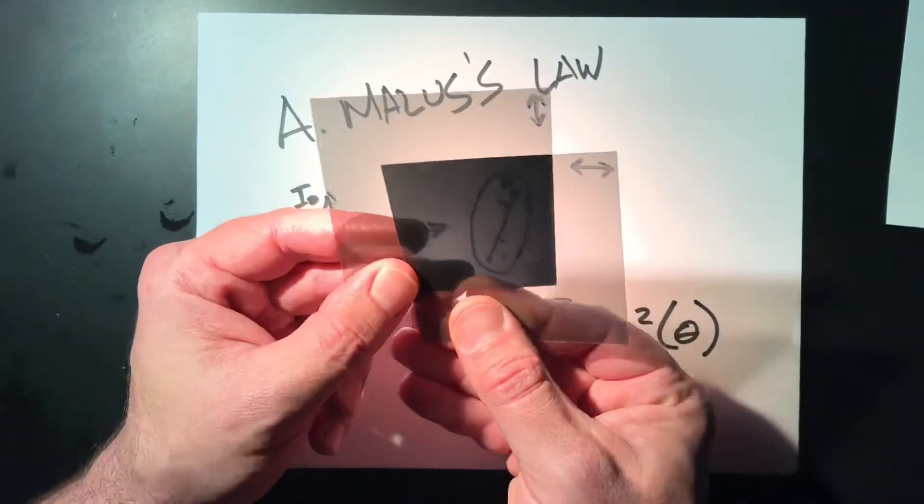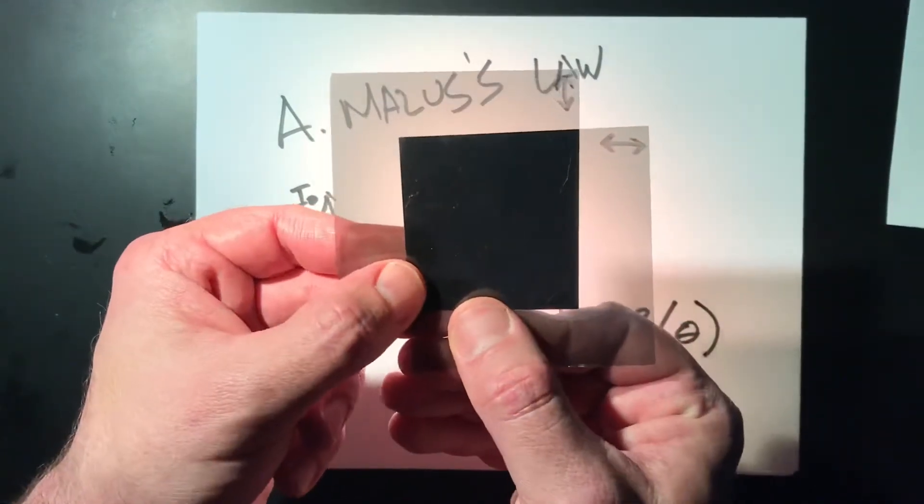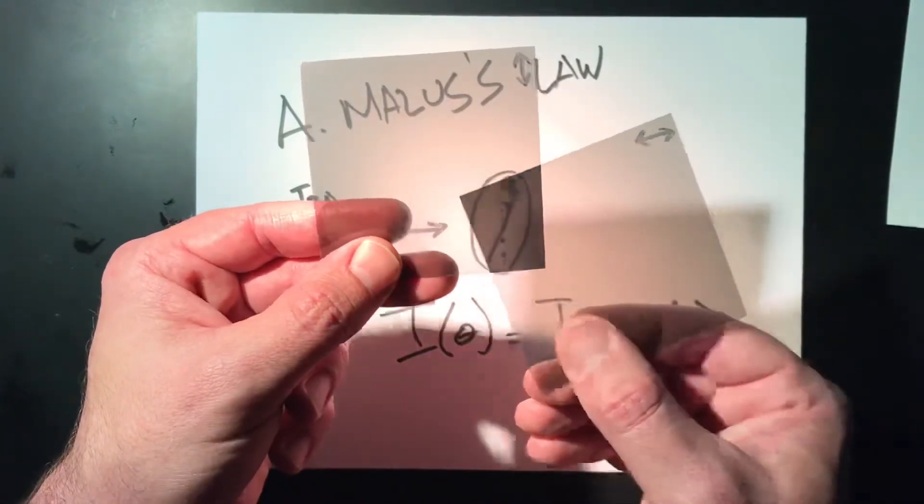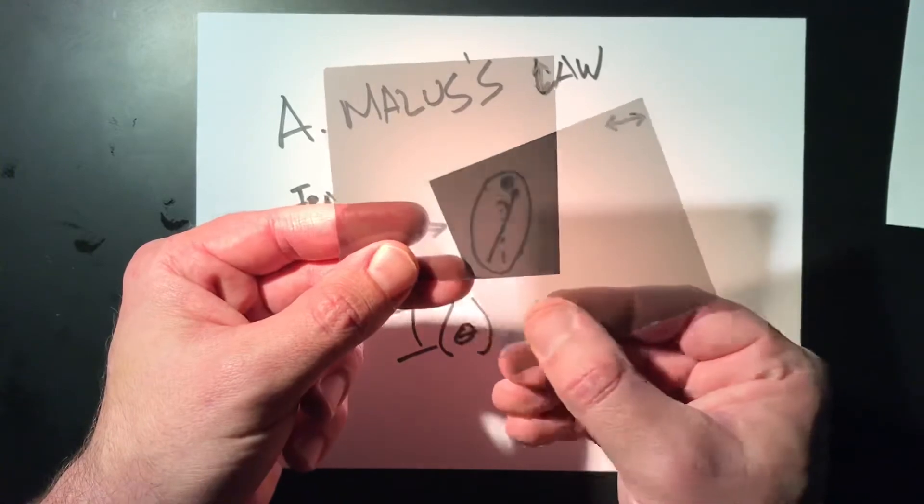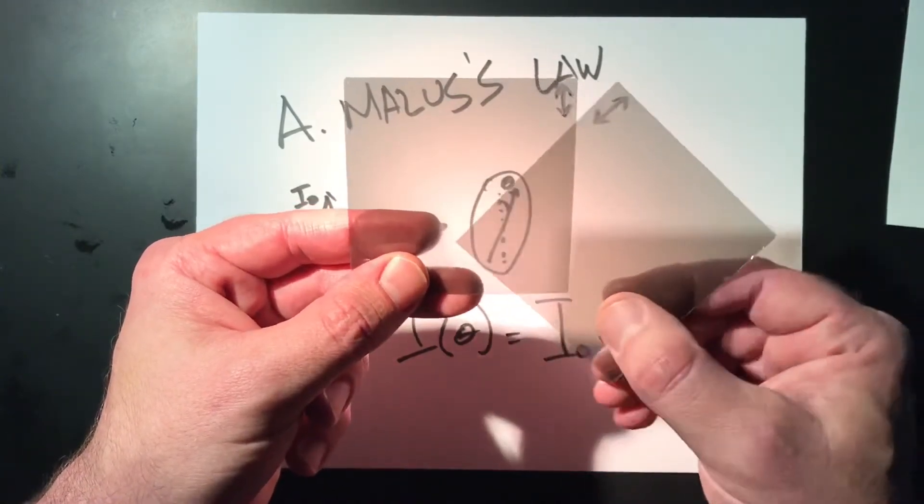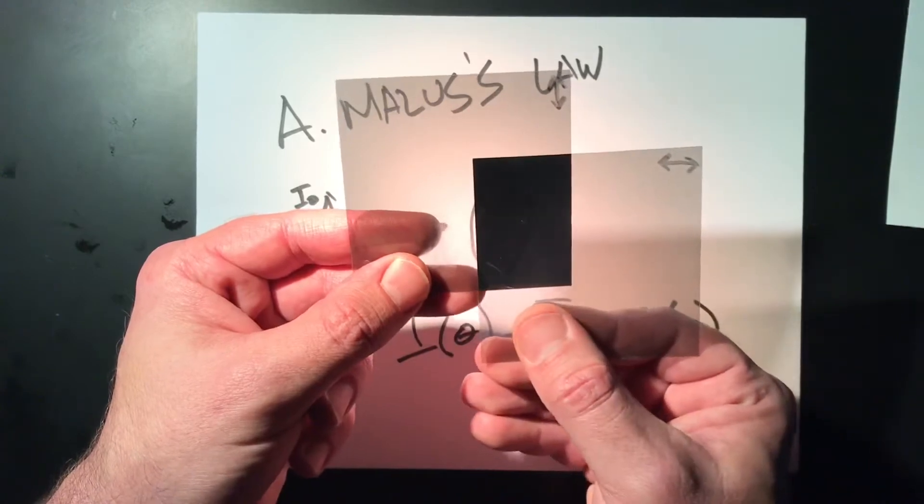If I cross them, it's not exactly perfect. You can see almost none of the light's getting through, but there is a little bit if you measure it carefully. But in general, if I cross them at a variable angle, you can see you get a variable amount of transmission through them.